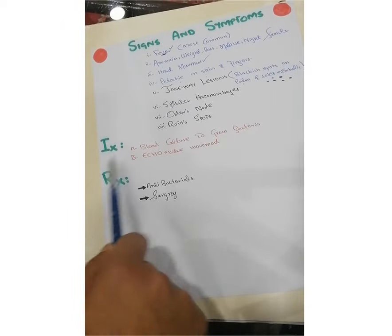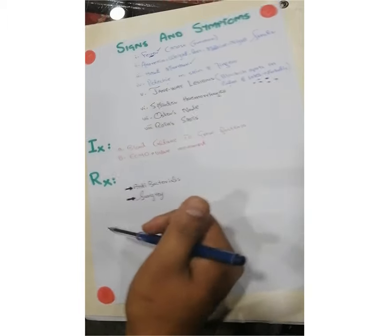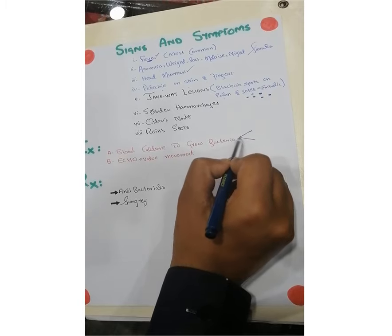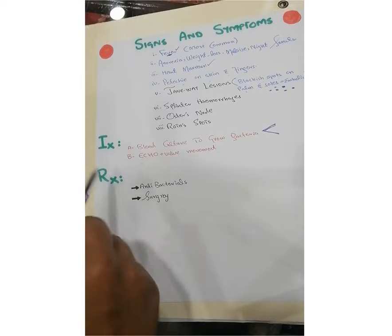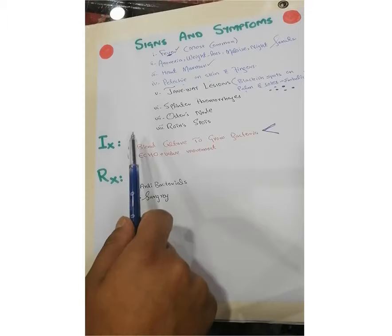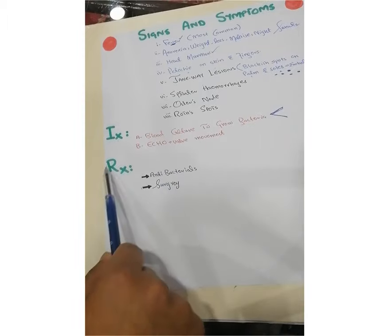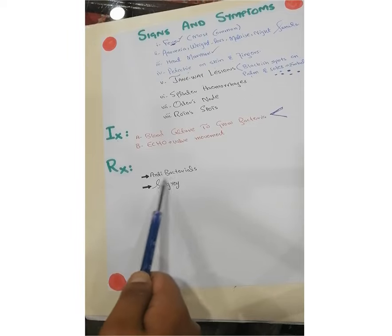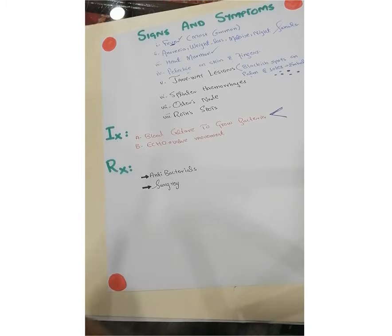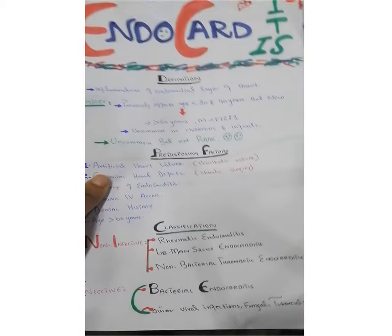These are the minor and major criteria used to diagnose infective endocarditis. Investigations include blood culture to isolate and grow bacteria on blood agar or chocolate agar to target the specific organism, and echocardiography to study valve movement and the endocardium. Regarding treatment, if caught in initial stages, antibacterial agents show good prognosis; if it progresses, surgery is required. This concludes the lecture on infective and non-infective endocarditis.